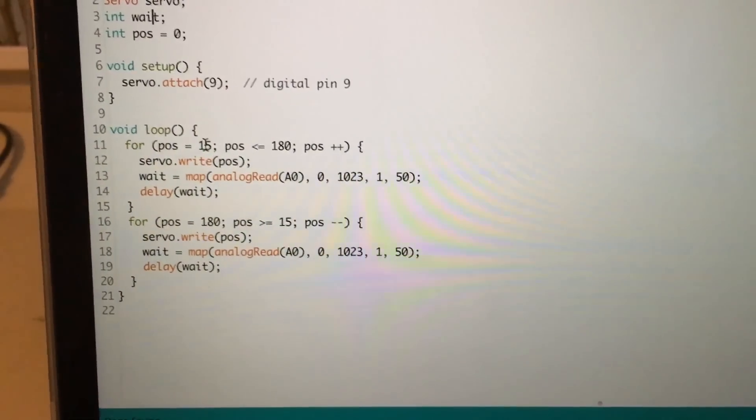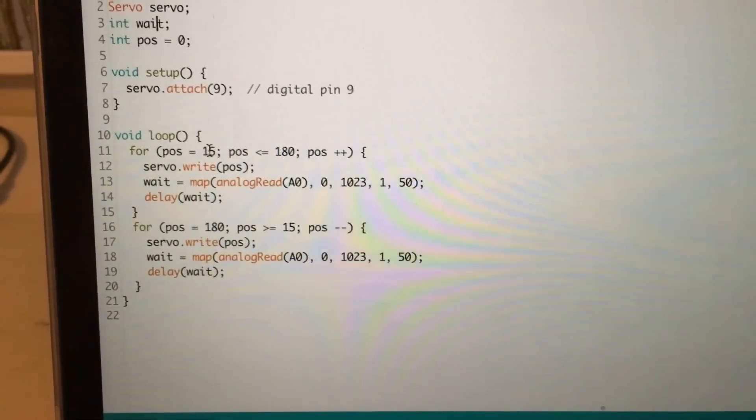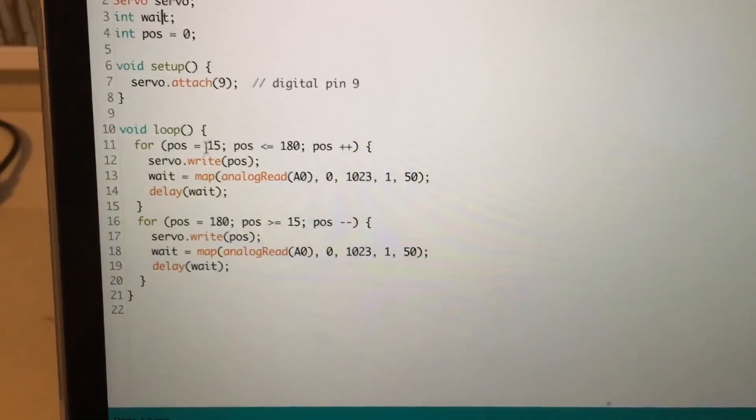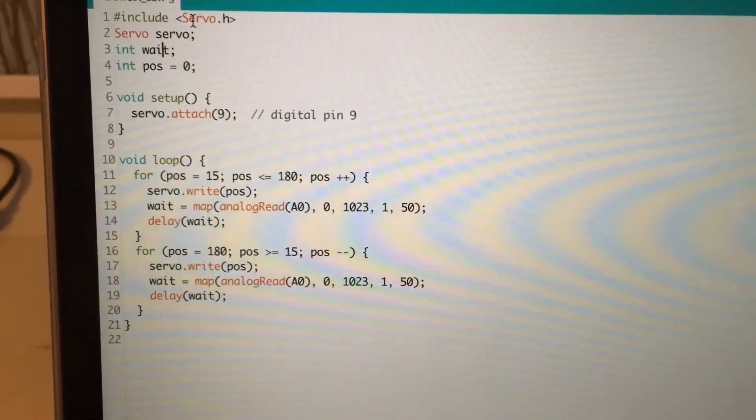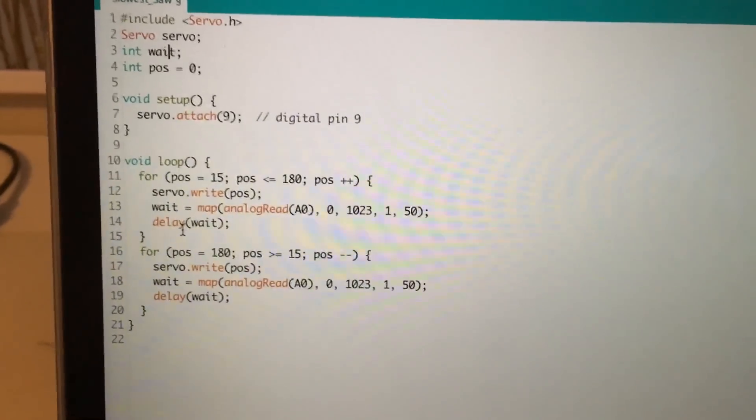It's very simple code. All it does is change the position of the servo from 15 degrees to 180 degrees. And it does a delay after each step. The potentiometer changes the length of the delay from 0 milliseconds to 50 milliseconds.